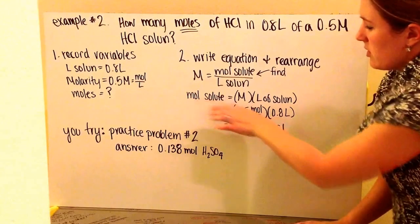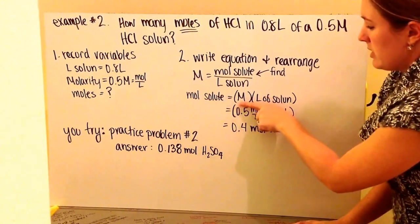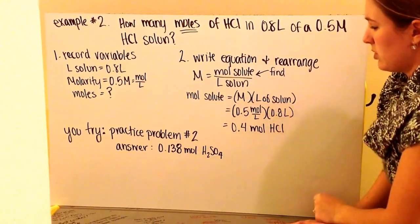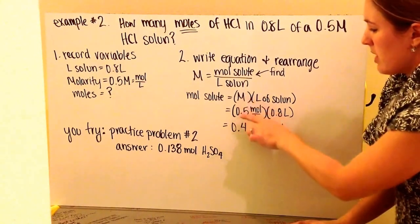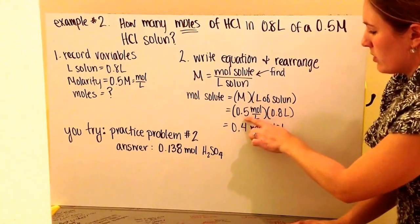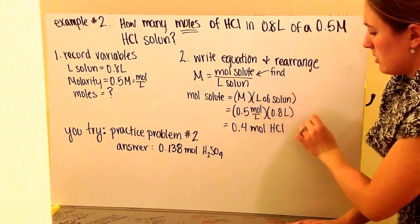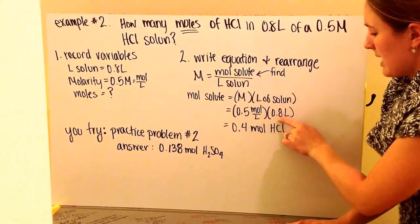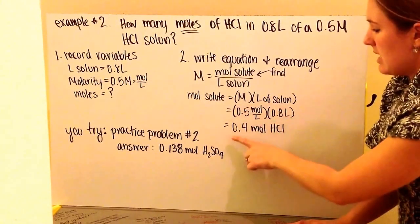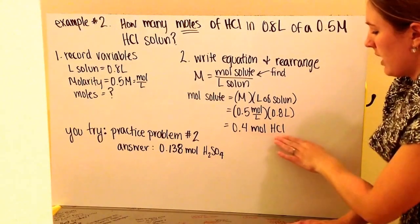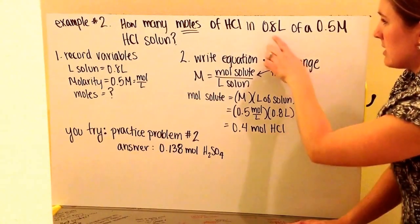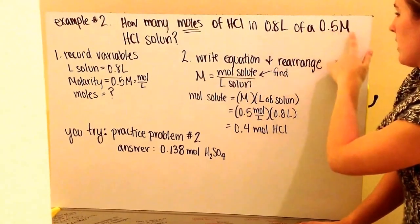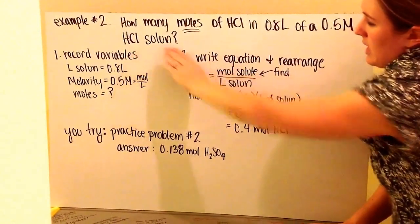To get moles of solute equals molarity times liters of solution. My molarity is 0.5 moles per liter, and my volume is 0.8 liters. Multiplying together, I get 0.4 moles of hydrochloric acid are in 0.8 liters of a 0.5 molar hydrochloric acid solution.